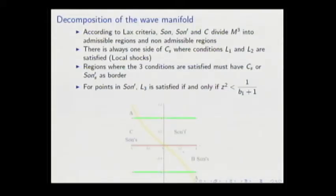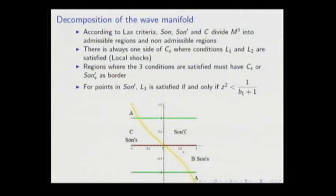For a point in sonic prime, condition L3 is satisfied if and only if a certain inequality is satisfied. The two values of Z in this inequality are the Z components of the double sonic loci. The double sonic loci are represented by these two green lines. We know that for region A, two regions are the same because we glue at infinity. Then we have three regions: here we don't have non-local shocks, here we have local shocks, here we have non-local shocks. The double sonic locus divides sonic prime into regions with local and non-local shocks.